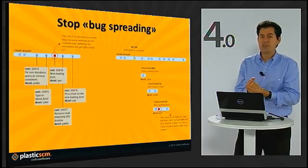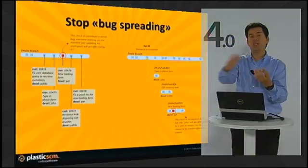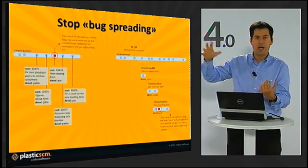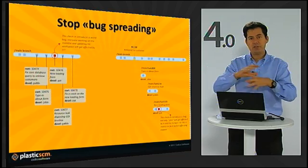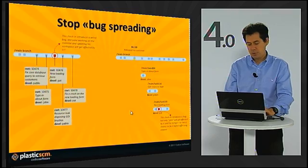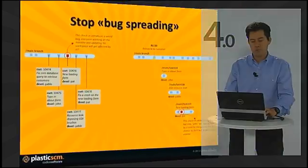Another really interesting thing is stopping the bug from spreading — one of my favorite ones. If you are working on the main branch and you check in a bug, you are already affecting the entire team. You can have a continuous integration server, an alarm, a red light — but you already broke the build. The better way is working on a branch: if you break your test on your branch, you just fix it and no one else gets affected. This is a much better way of working.